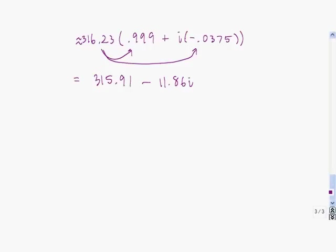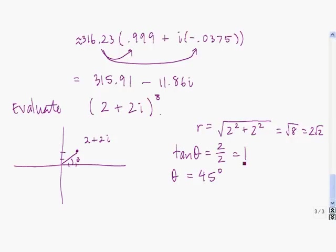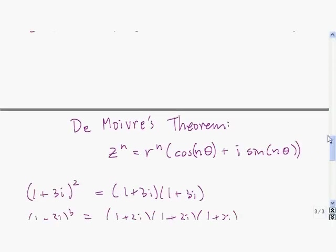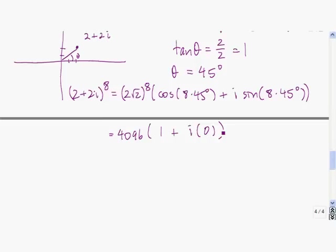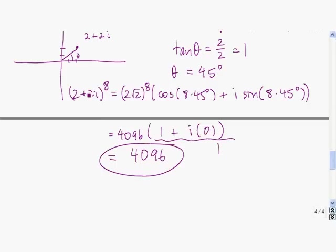Now try this one yourself — press pause while you work on it. You should find that R equals 2 square root of 2 and theta equals 45 degrees. Plugging into De Moivre's theorem, 2 plus 2i to the eighth power equals 2 root 2 to the eighth power times cosine of 8 times 45 degrees plus i times sine of 8 times 45 degrees. That equals 4096 times 1 plus i times 0, which is simply 4096.